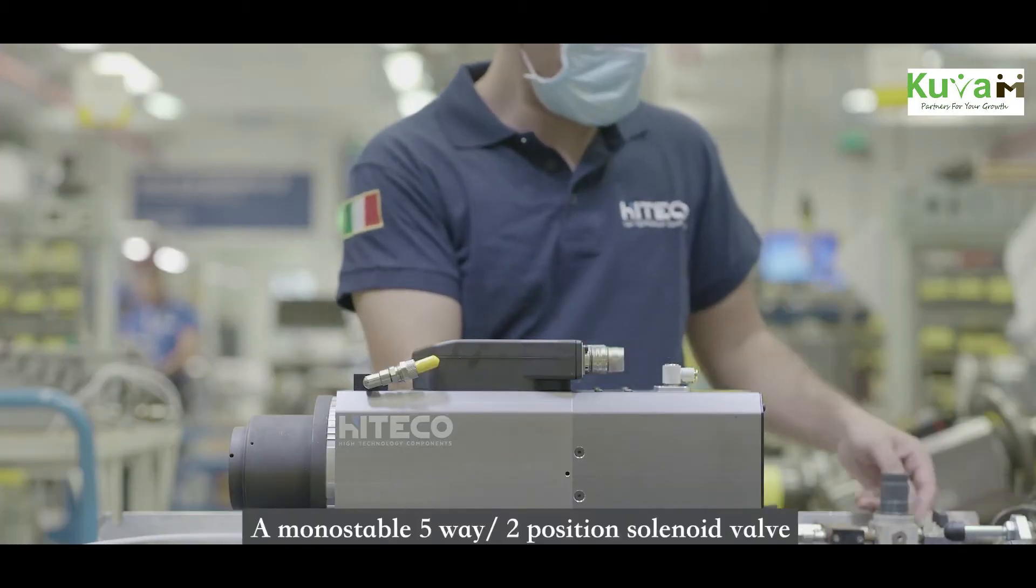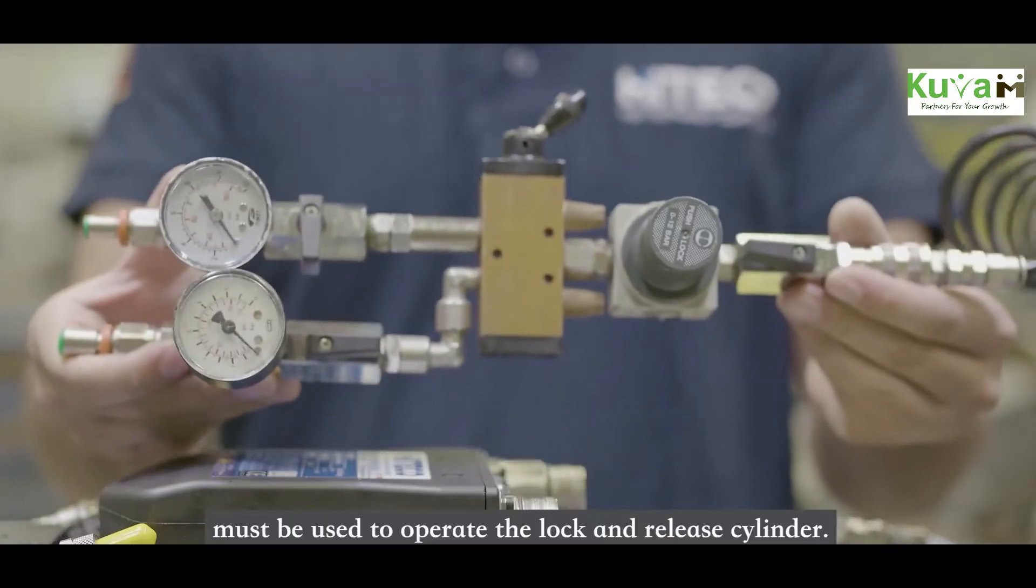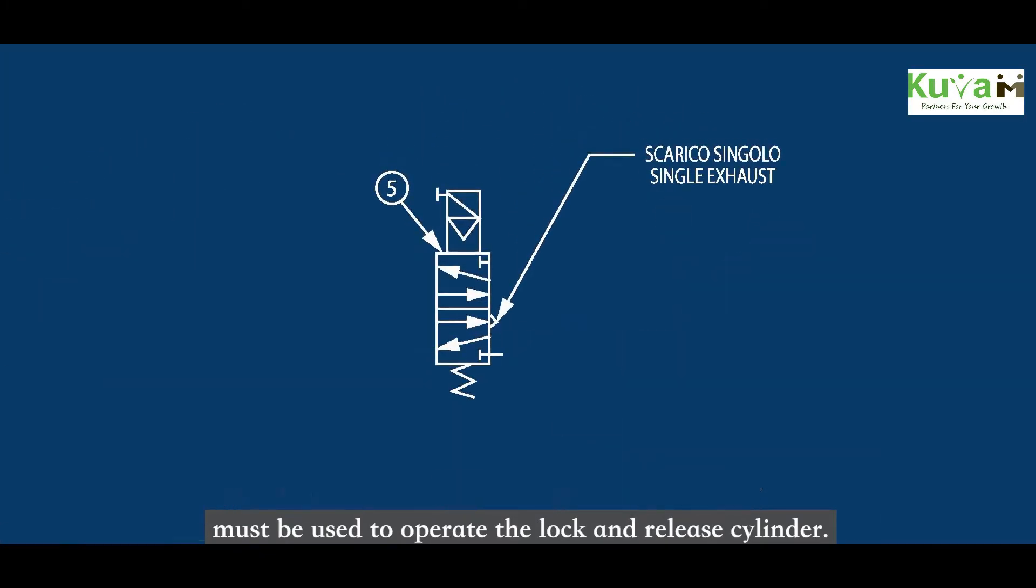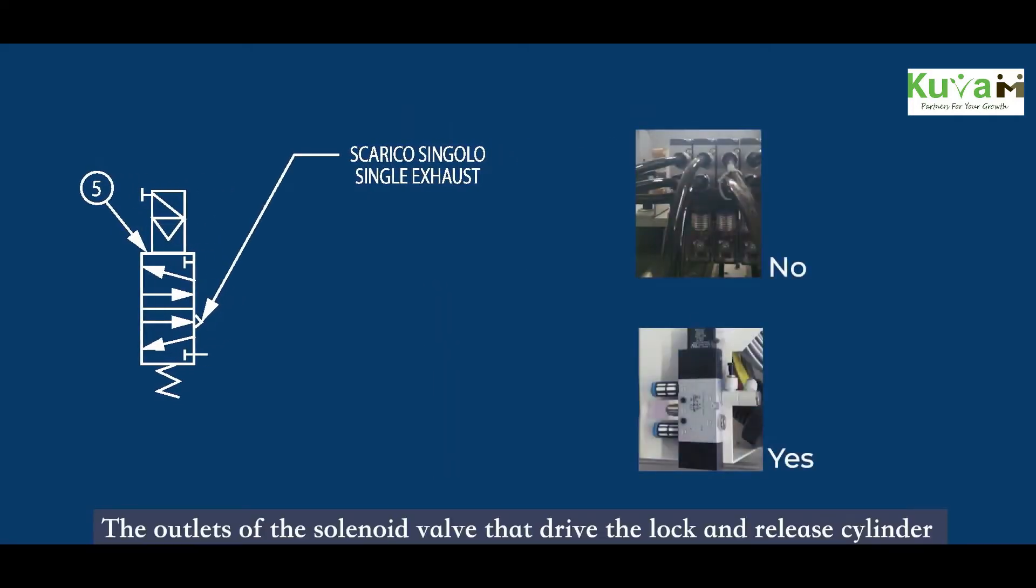A monostable five-way two-position solenoid valve must be used to operate the lock and release cylinder. The outlets of the solenoid valve that drive the lock and release cylinder must be independent and not shared.